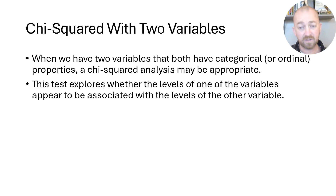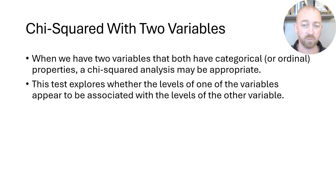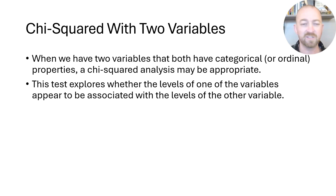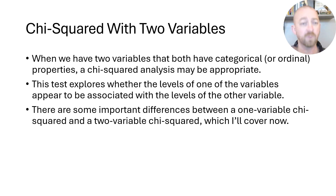In a very simple instance, what you want to see is: if you're in one level of one of those variables, does that influence which level of the other variable you are likely to fall into? That may not make a whole lot of sense at this point, but it will as we cover some more examples. This video is just going to focus on the important differences when we have two variables for a chi-squared analysis as opposed to just the one.